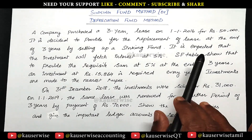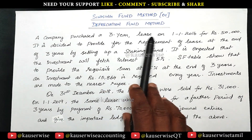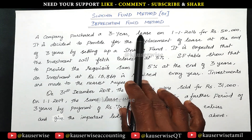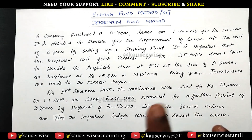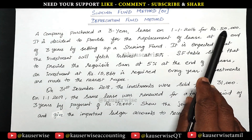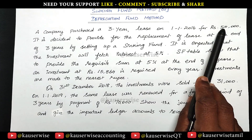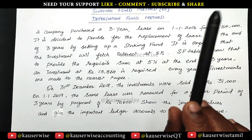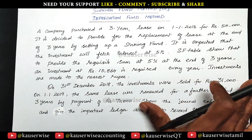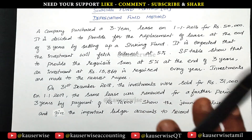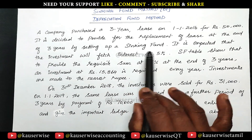We have to make journal entries for 3 years because the lease is taken for 3 years. In the first year, you have to make 4 entries. The first entry is for purchase of lease: lease account debit to bank account for Rs. 50,000. Then for the amount of depreciation — according to this method, the amount of depreciation is calculated with reference to the sinking fund table.